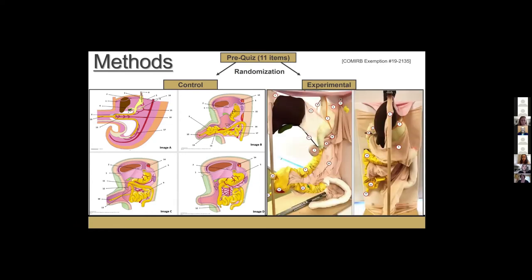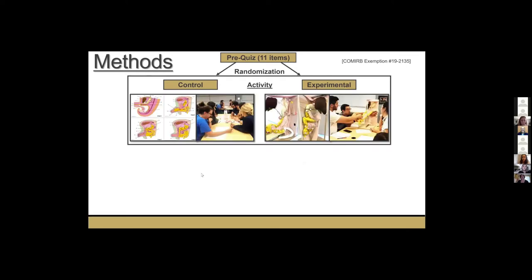Students in the experimental group were provided with the 4D interactive resource demonstrating the same processes and structures as in the 2D images. An example of these would be numbers 7 and 8, which are the head and tail of the pancreas. Both groups completed an activity worksheet with identical learning objectives utilizing their assigned resource. After completing the activity, both groups took the same post-quiz and survey. The post-quiz contained different questions from the pre-quiz to control for repeated quiz effect, but they were guided by the same learning objectives and level of difficulty.